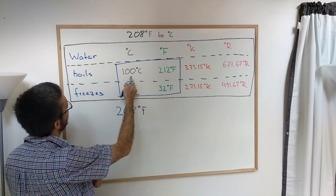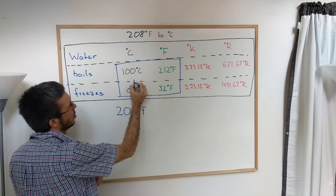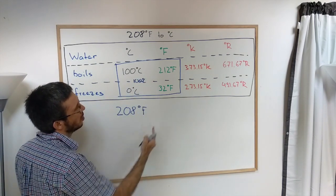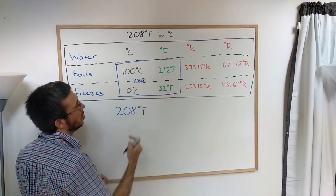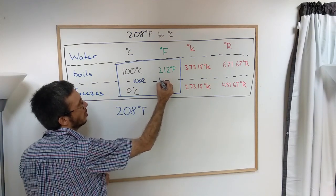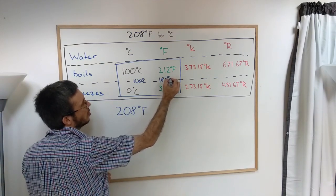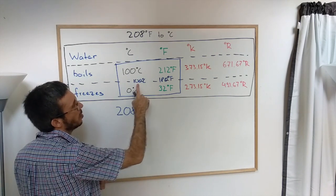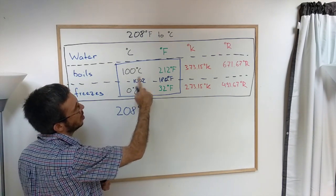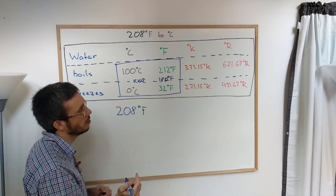What's the difference here between boiling and freezing? The difference is 100 degrees Celsius. What is the difference here between boiling and freezing? It's 180 degrees Fahrenheit. So a difference of 100 degrees Celsius must be equal to a difference in 180 Fahrenheit.